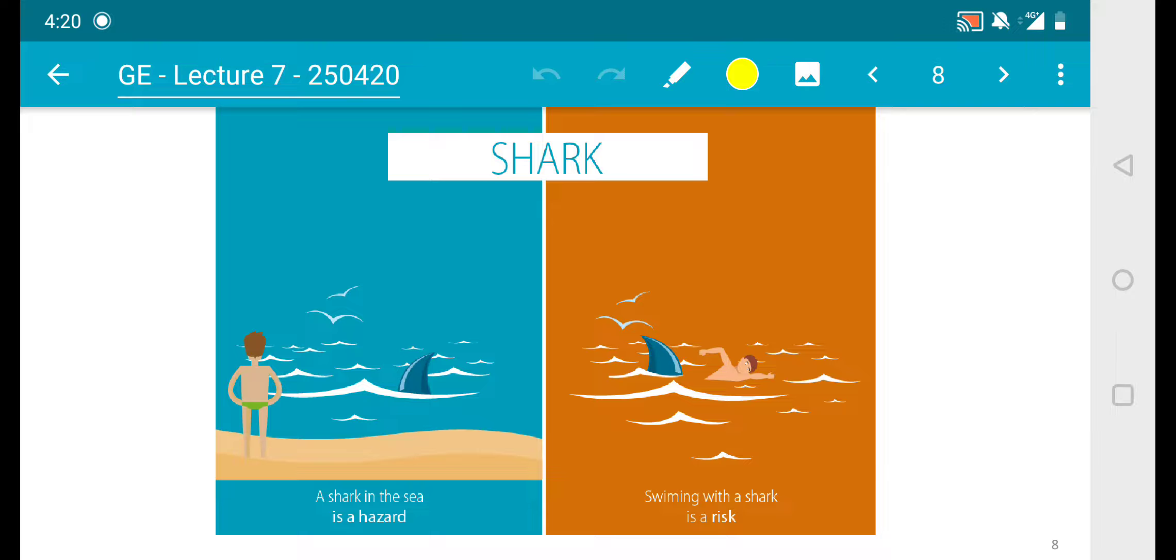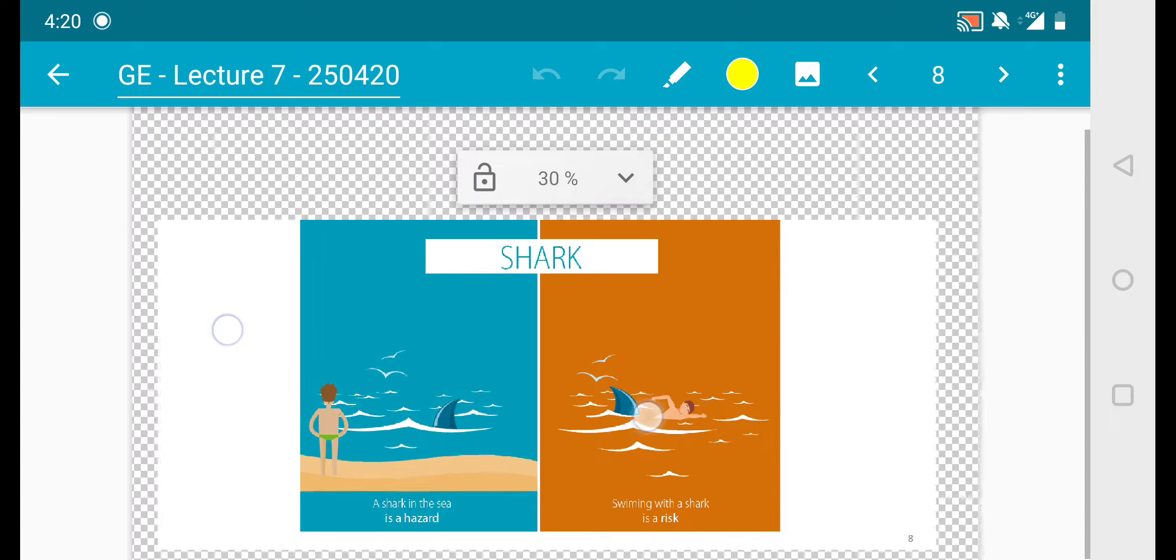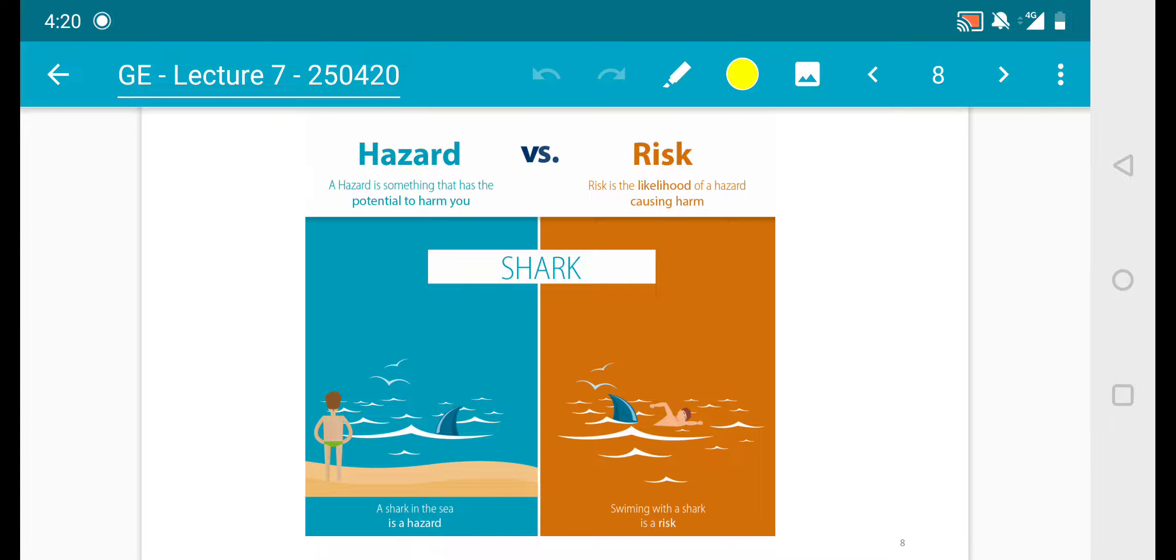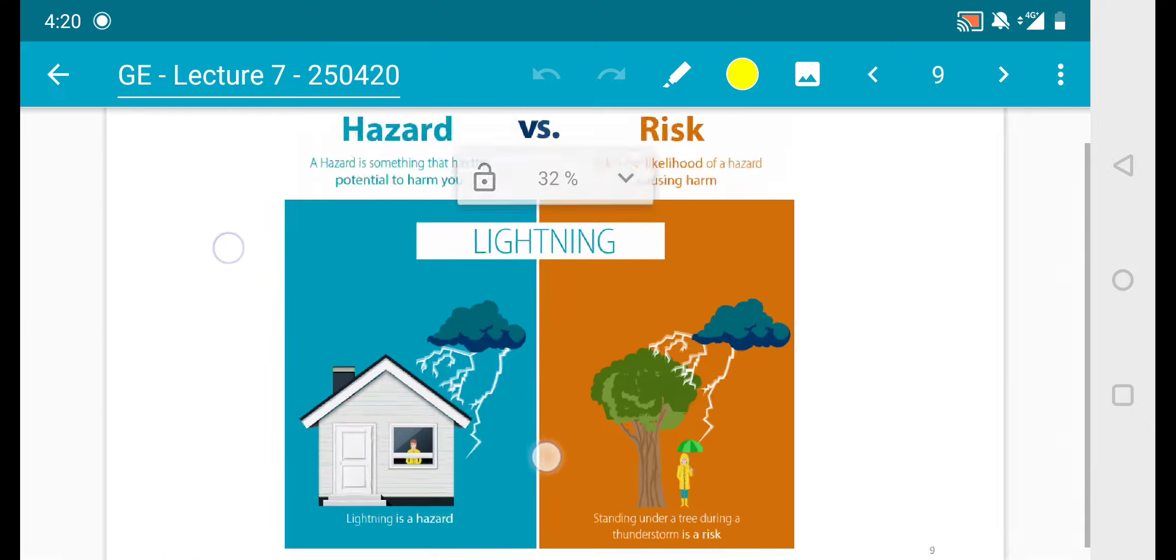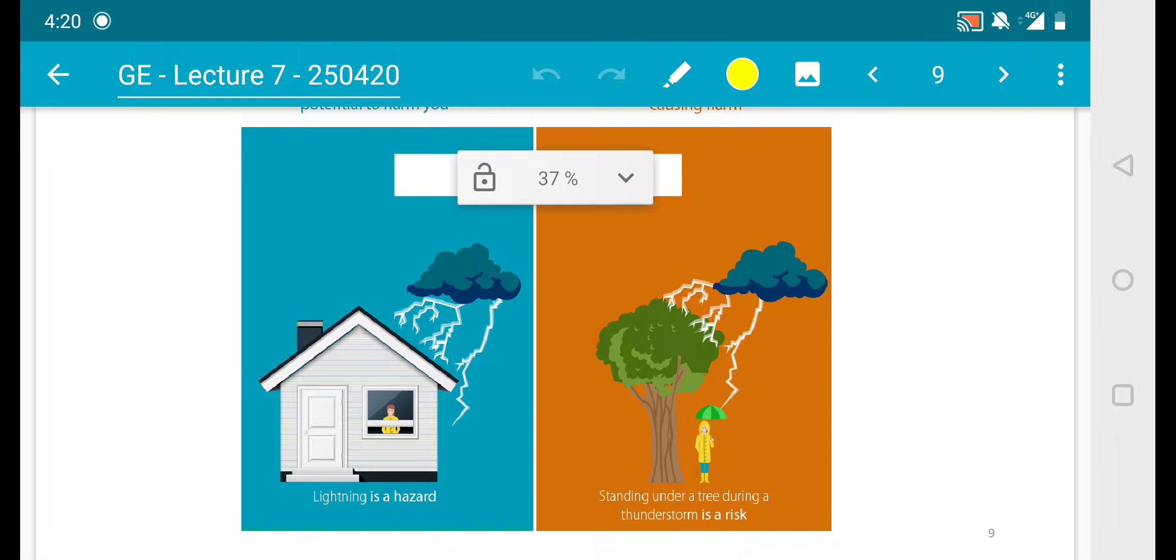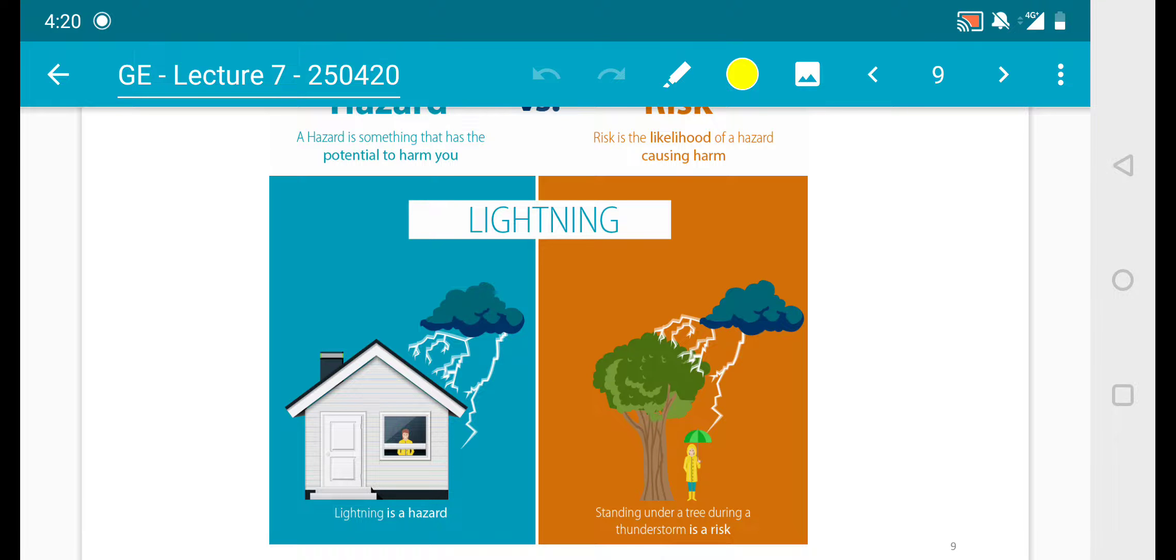Risk is the likelihood of a hazard causing harm, which is when you're swimming with a shark - that's a high risk. Let's look at another figure. A hazard is something that has the potential to harm you - you're sitting in a house and there's lightning outside, so the lightning is a hazard. A risk is when you're standing under a tree during a thunderstorm. That's a high risk if you're standing beside a tree during a thunderstorm.